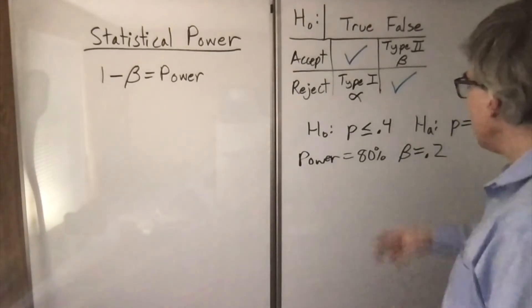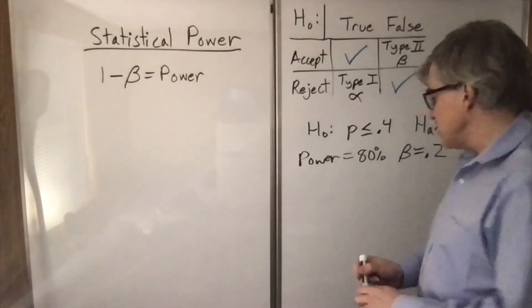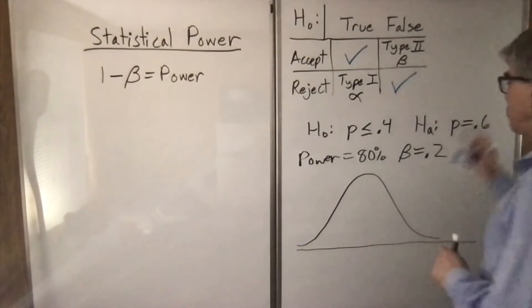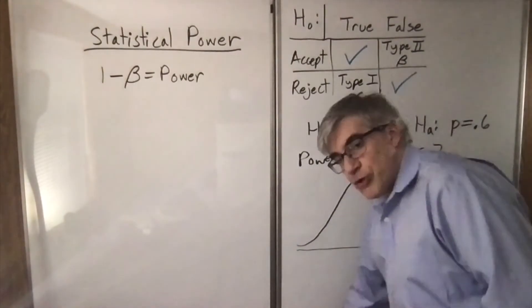But what does this mean visually? We are doing a one-sided hypothesis test. So you're used to seeing a bell curve, but what we have now is two bell curves. Now where do I draw the cutoff?